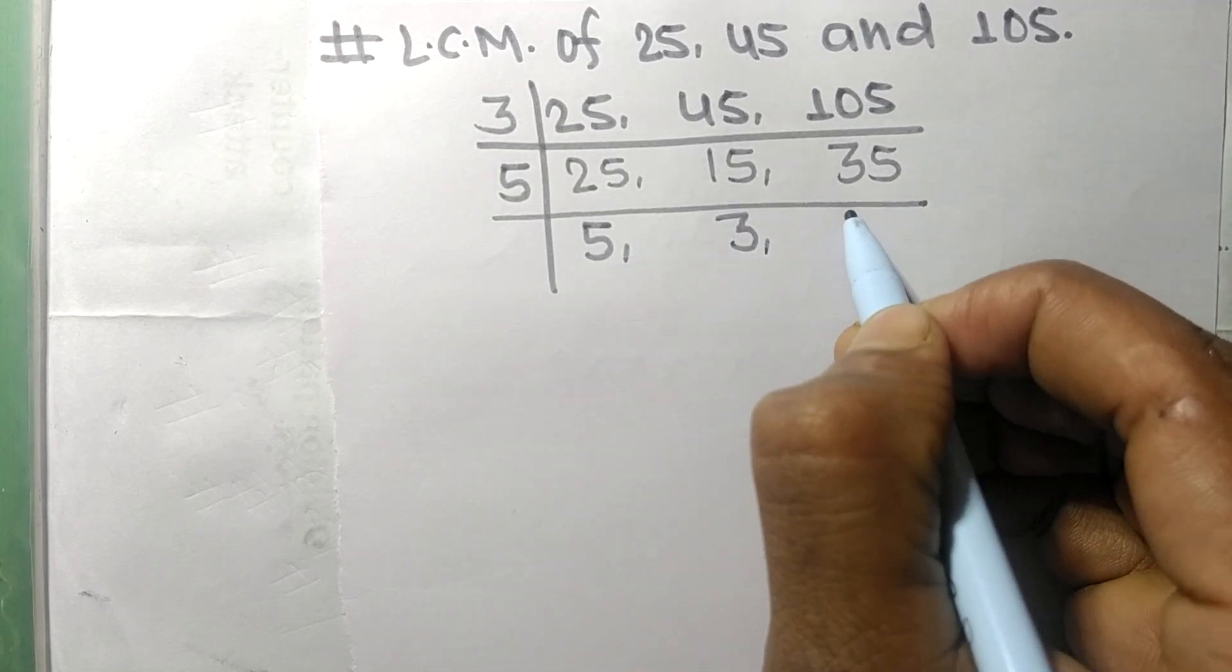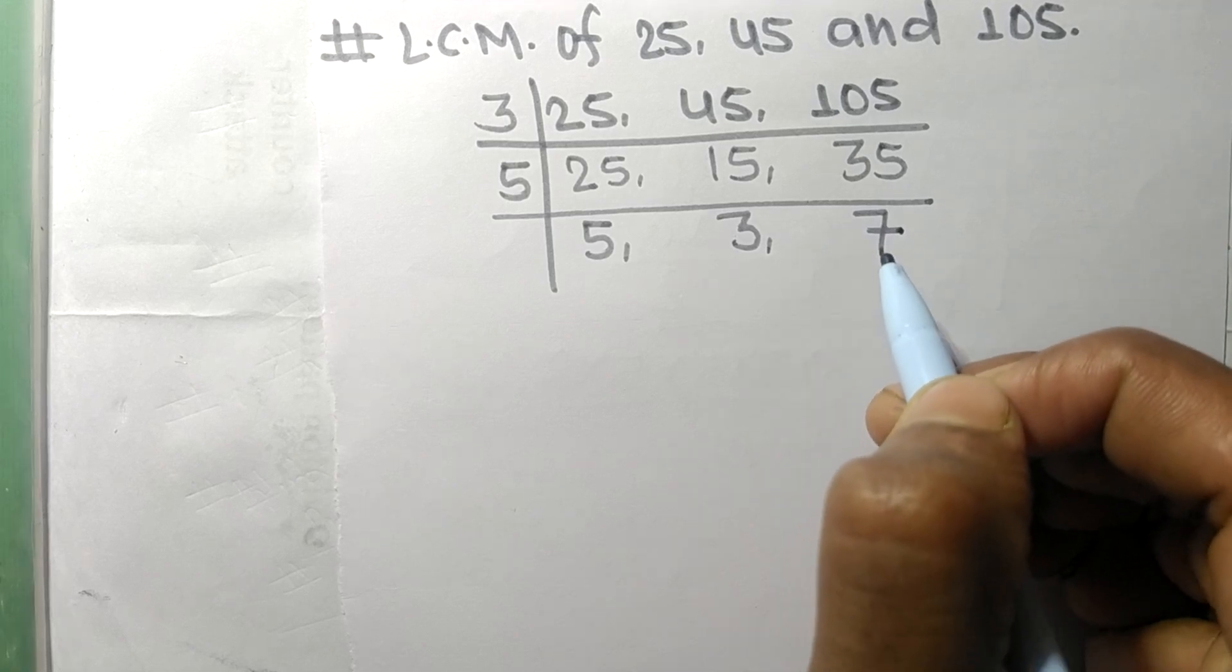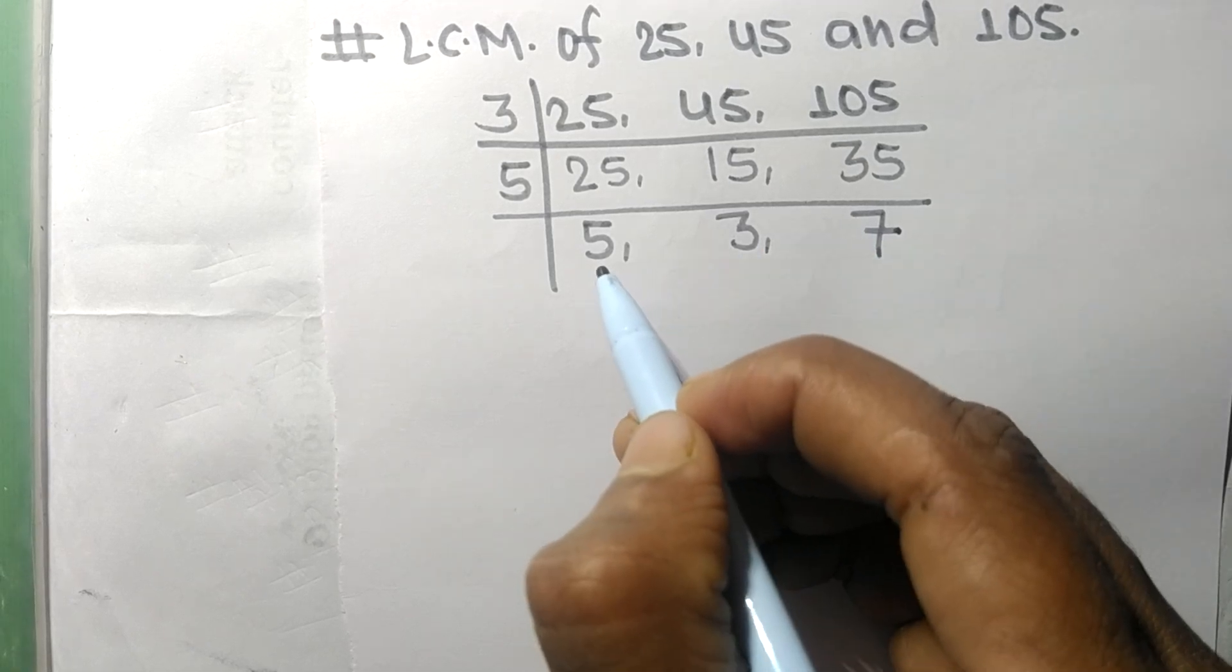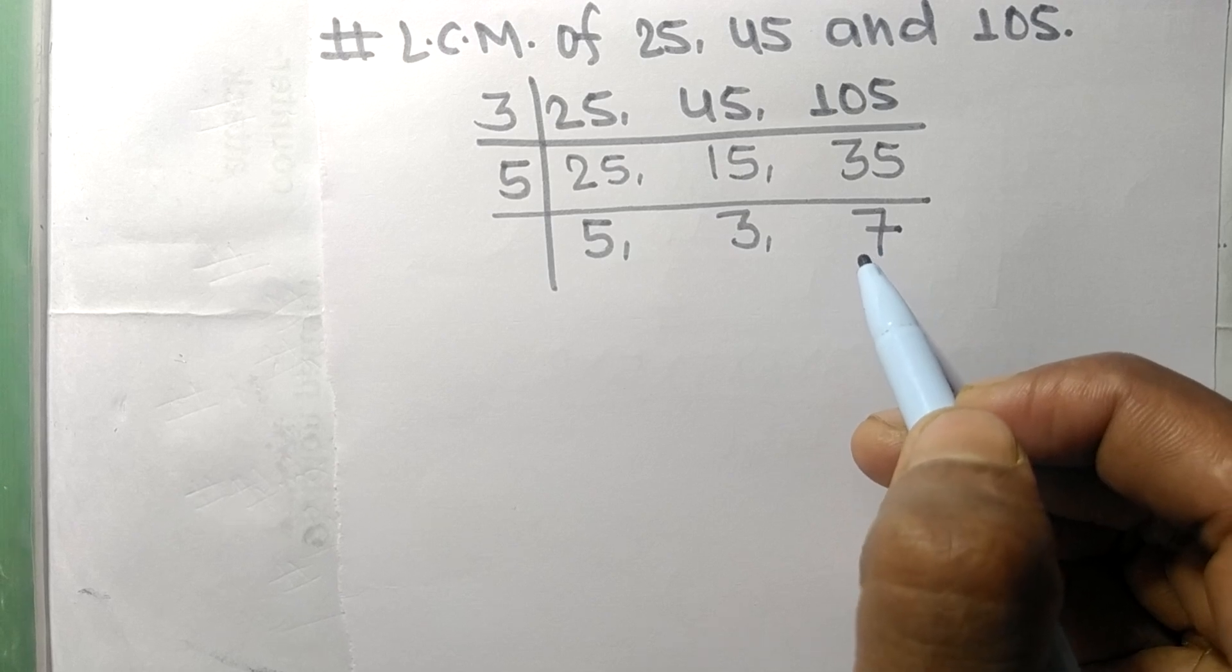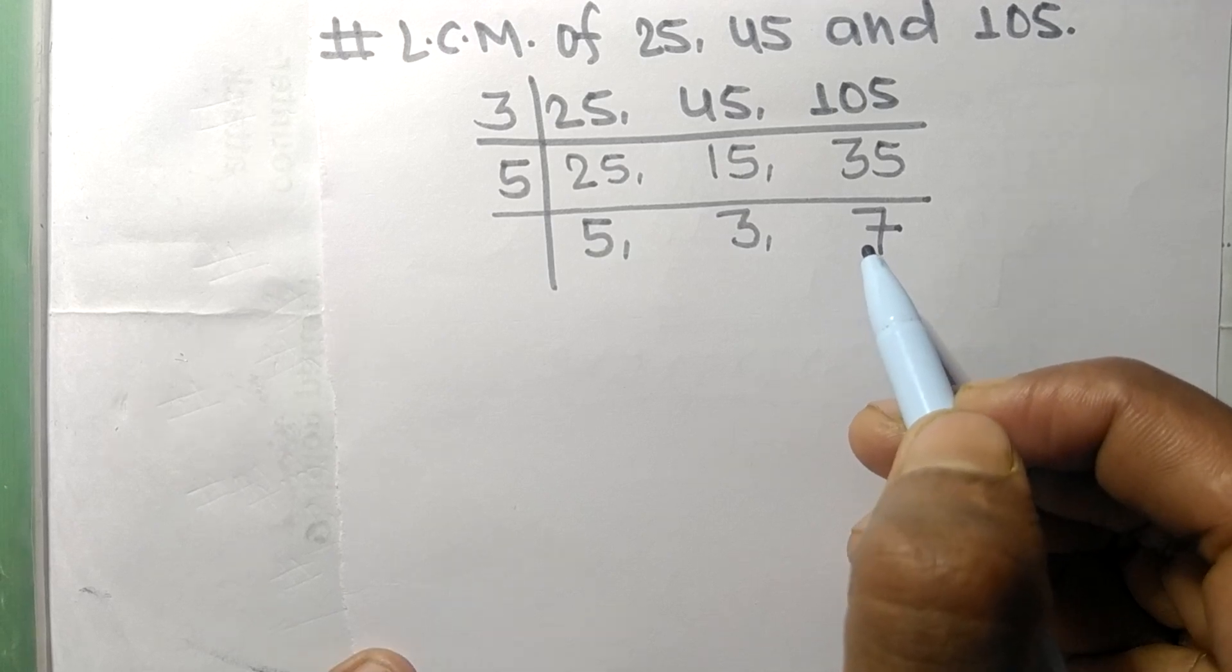5 times 7 equals 35. Now the numbers 5, 3, and 7 are not exactly divisible by the same number.